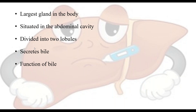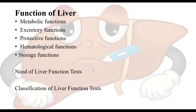If we classify the different functions the liver performs, we can classify them as metabolic functions, excretory functions, hematological functions, detoxification, and storage. Each of these functions is very important, and the tests we do for liver function tests — to study whether the liver is functioning properly — are based on all these functions. From the beginning, we have been seeing a lot of metabolic and biochemical cycles, and all of them occur in the hepatocellular cells.